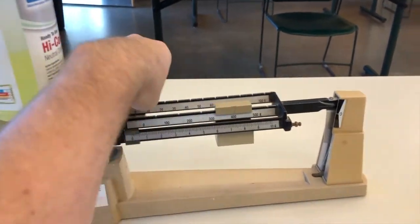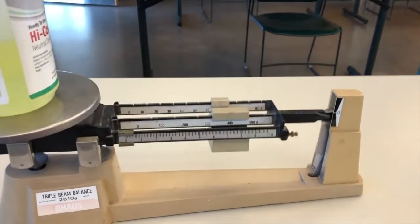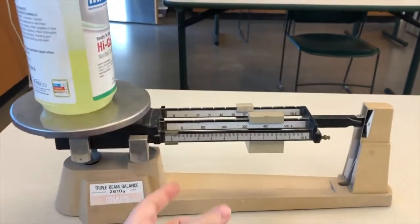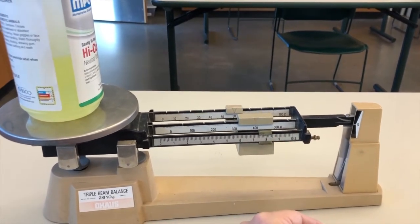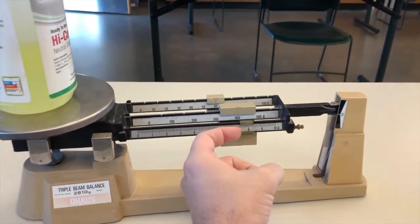Interestingly, the balance needs gravity to work. If there was no gravity, the arm of the scale would stay wherever you put it. If the mass of the object and the slugs is the same, then the weight of the object and the weight of the slugs is the same, and the arm will balance.